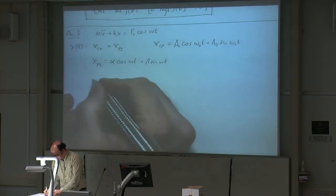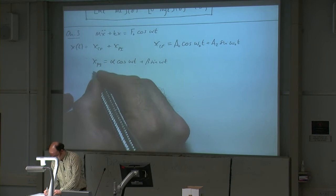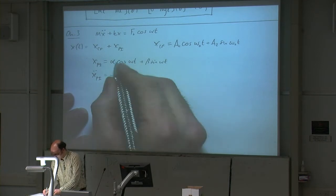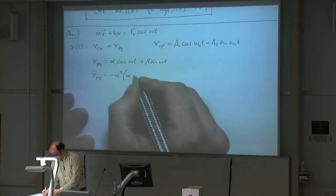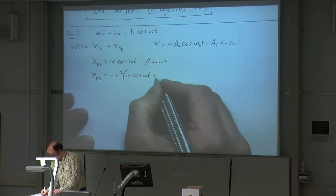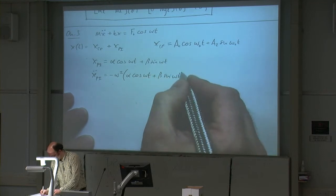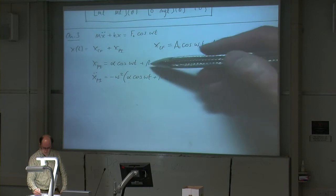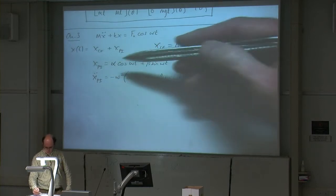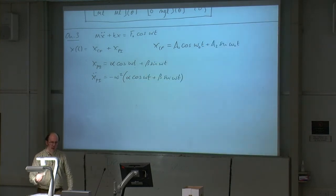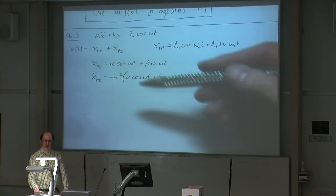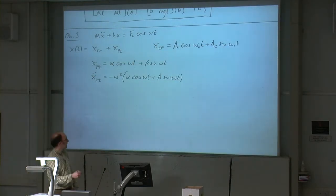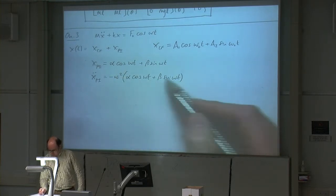So we have to put this trial function into the equation of motion, and to do that I need to take the second derivative xpi-double-dot. I'm going to get minus omega squared, because that comes out of both terms — you get a minus sign. When you take the first derivative, you get an omega coming out of each term: cosine turns into minus sine and sine turns into cosine. Taking the derivative again, another omega comes out, giving minus omega squared for both terms.